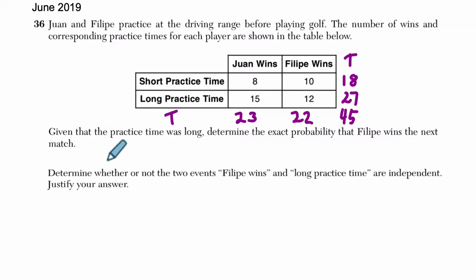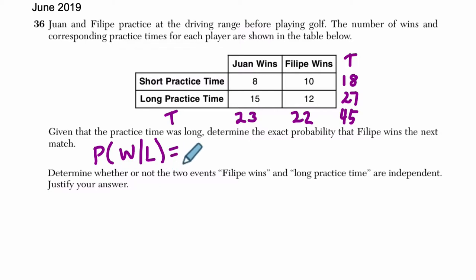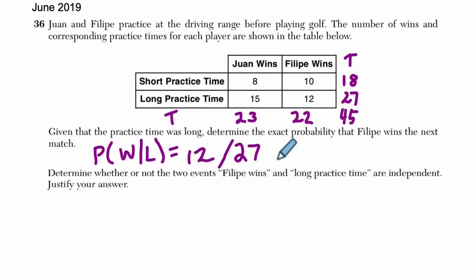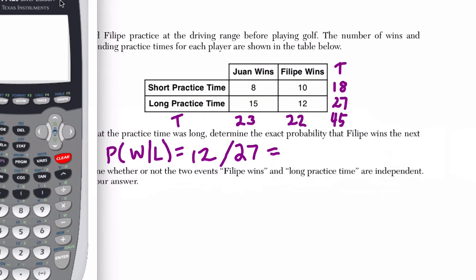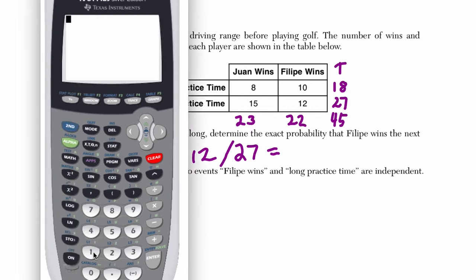Given that the practice was long, determine the exact probability that Felipe wins, given that the practice was long. So how many long practices were there? Let's look at our row — here's 27. Out of that 27, how many times did Felipe win? 12. So 12 out of 27, and they want the exact probability. If you plug this into your calculator, we get 12 out of 27, and that is .4 repeating.